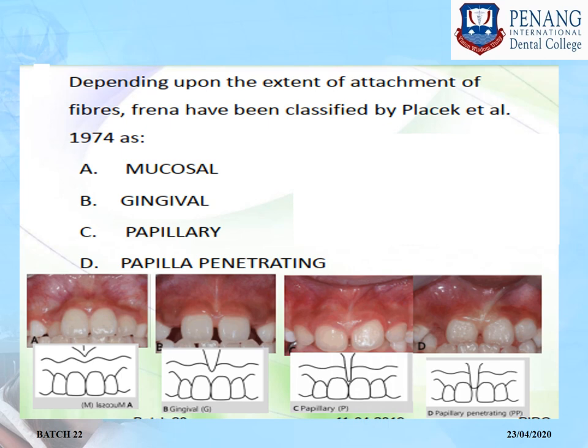This classification is based on the attachment location: mucosal type has attachment on the mucosa; gingival has attachment in the gingiva; papillary has the frenum attached on the interdental papilla; and papillary penetrating type penetrates the papilla and extends to the other side of the mucosa — this type of frenum can also cause midline diastema.